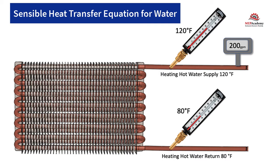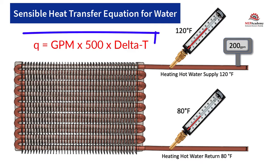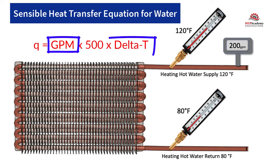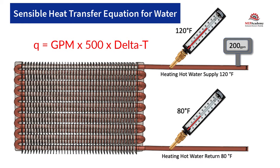In this video, we're going to look at the Sensible Heat Transfer Equation for Water. This is useful when trying to determine either of the three variables: BTUs, GPM, or the Delta T. When you know two of these values, you can determine the remaining missing value.